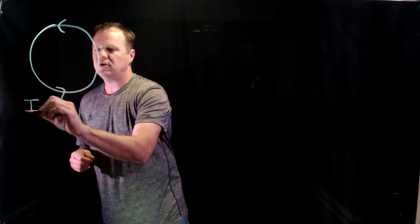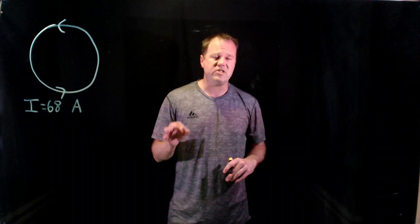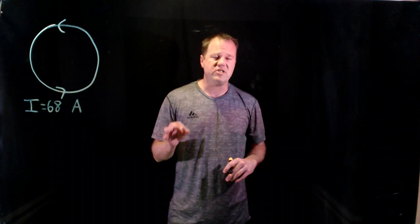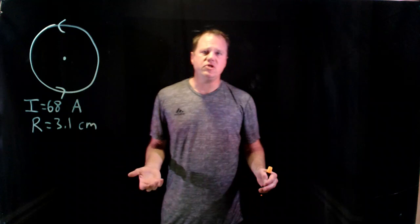A moving charged particle can be in the form of a current carrying wire. So let's say we have a loop carrying 68 amperes counterclockwise. So the current is 68 amps. In order to calculate the magnetic field at the center, I need to know the radius of this loop. Let's say it's 3.1 centimeters. I'm going to determine the magnetic field right at the center there.